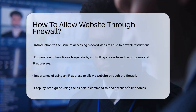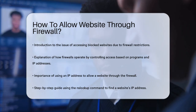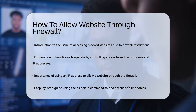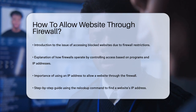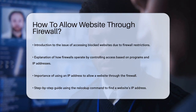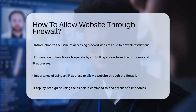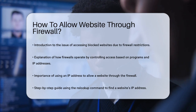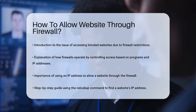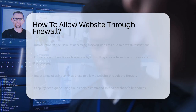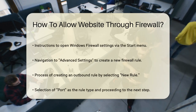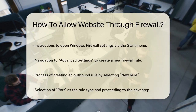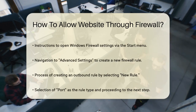One approach is to use the website's IP address. Use the nslookup command in your command prompt to find the IP address of the website you want to allow. For example, if you want to allow example.com, you would type nslookup example.com.